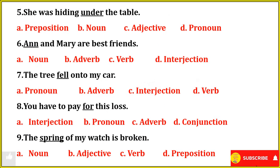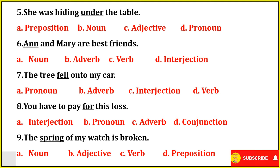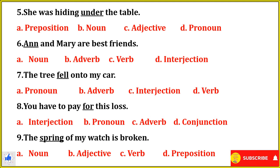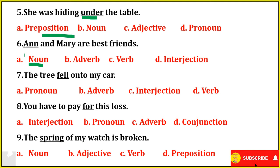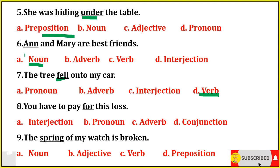Next set of questions. You can pause the questions and then check the answers — you can do it that way too. Fifth one: She was hiding under the table — so 'under' will be preposition. Anne and Mary are best friends — 'Anne' here will be noun as it is the name of a girl. The tree fell onto my car — so 'fell' will be verb.